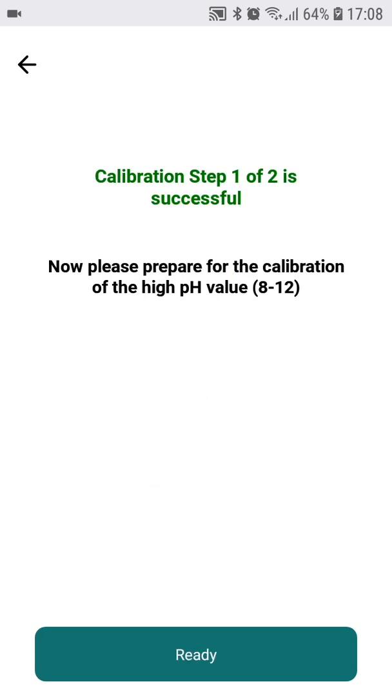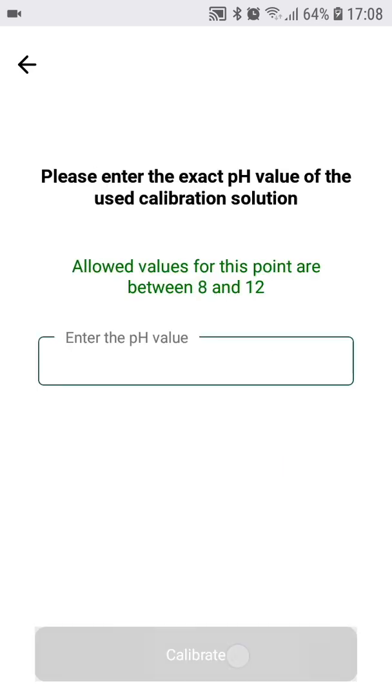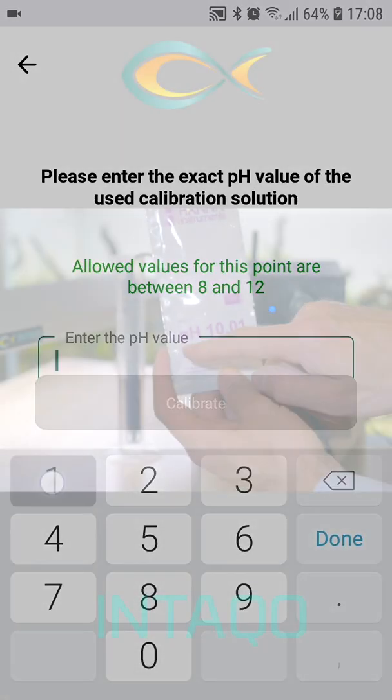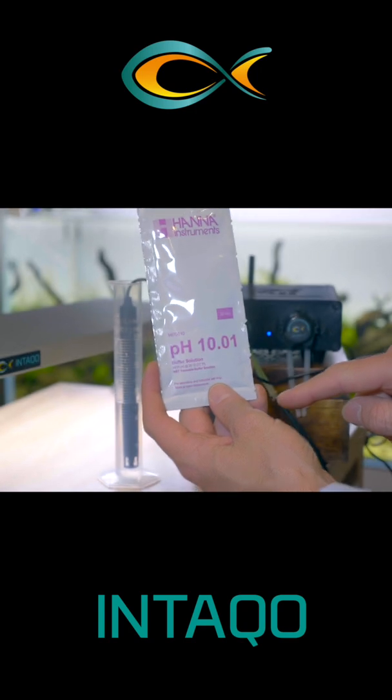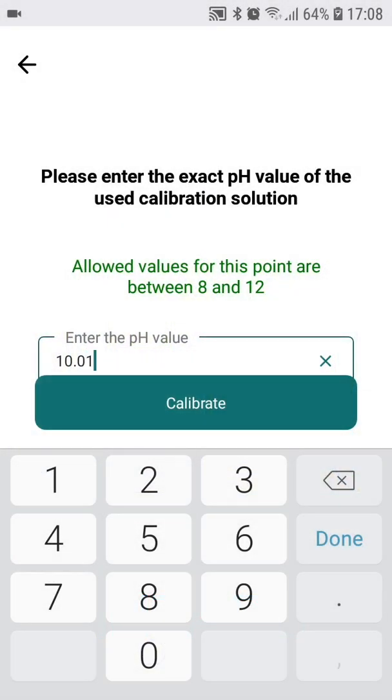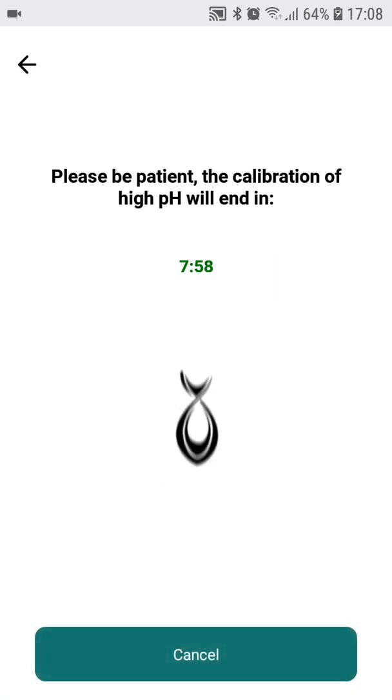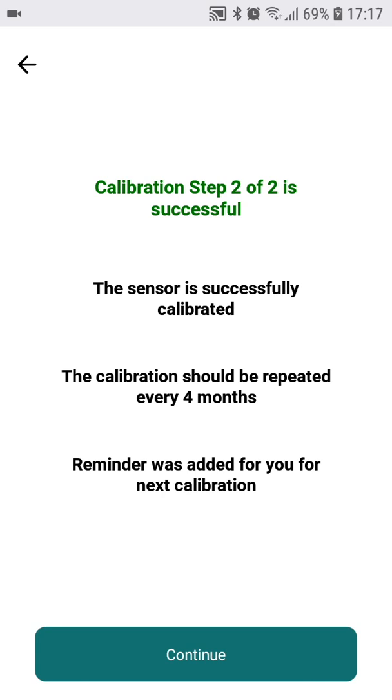After the probe is stabilized it automatically sets the low pH calibration point and we need to calibrate with the other calibration solution. When changing the calibration solution it is good to clean the probe in clean water. Next we need to make the calibration point on the high end of the pH scale. It will again take some minutes to stabilize. Luckily enough it is only needed to recalibrate the sensor about once in four to six months.